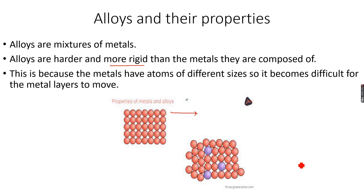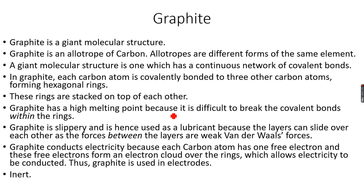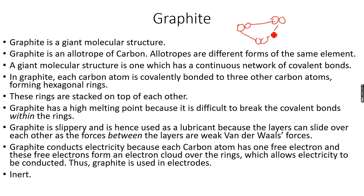Graphite is a giant molecular structure. To differentiate: a simple molecular structure has intermolecular forces between molecules, whereas a giant molecular structure has covalent bonding throughout the entire structure — no intermolecular forces, only covalent bonds.